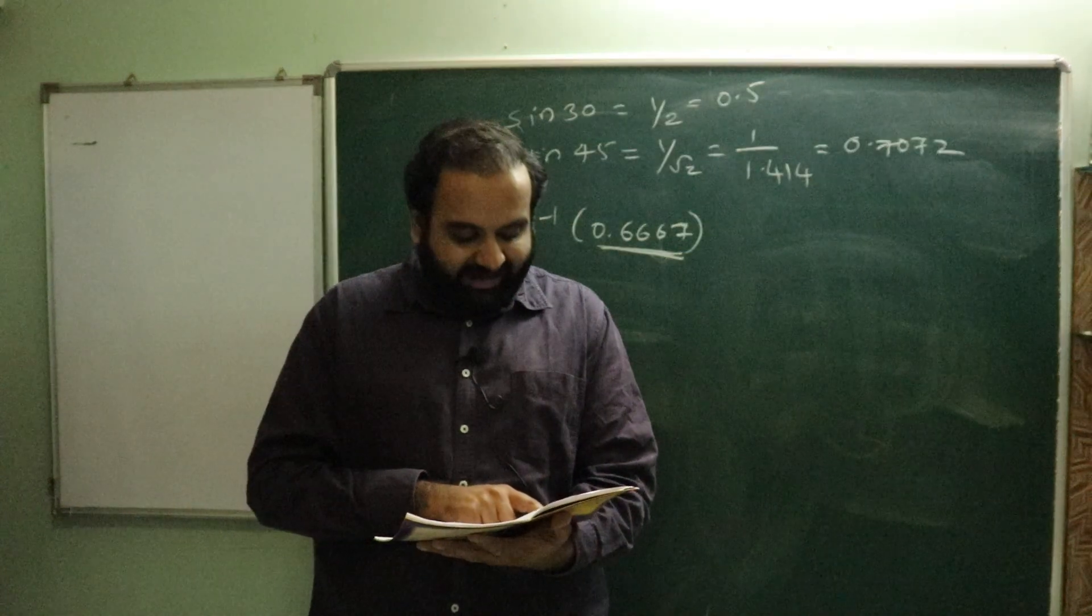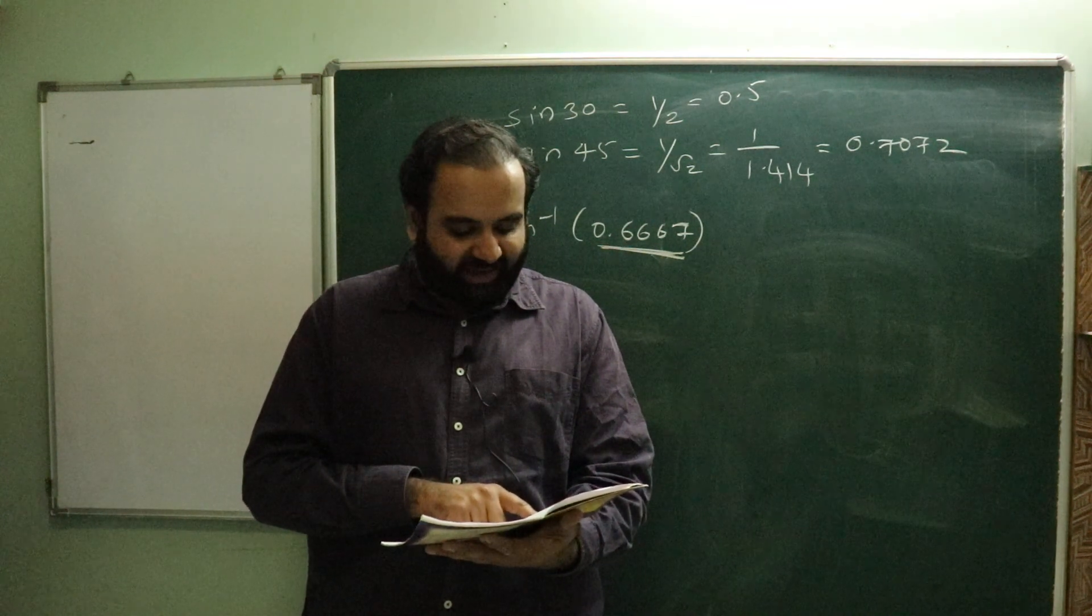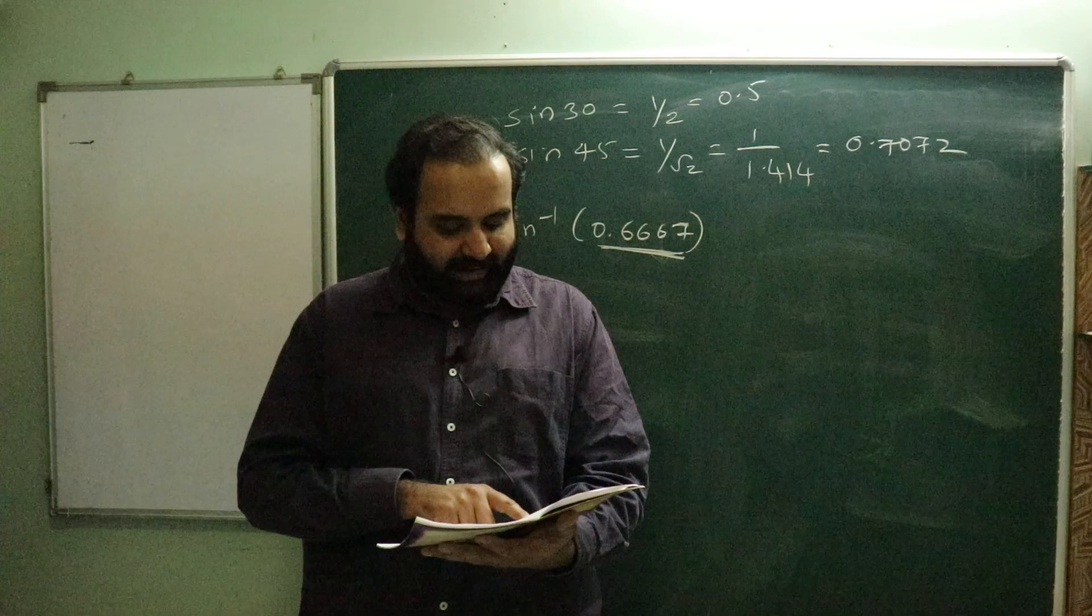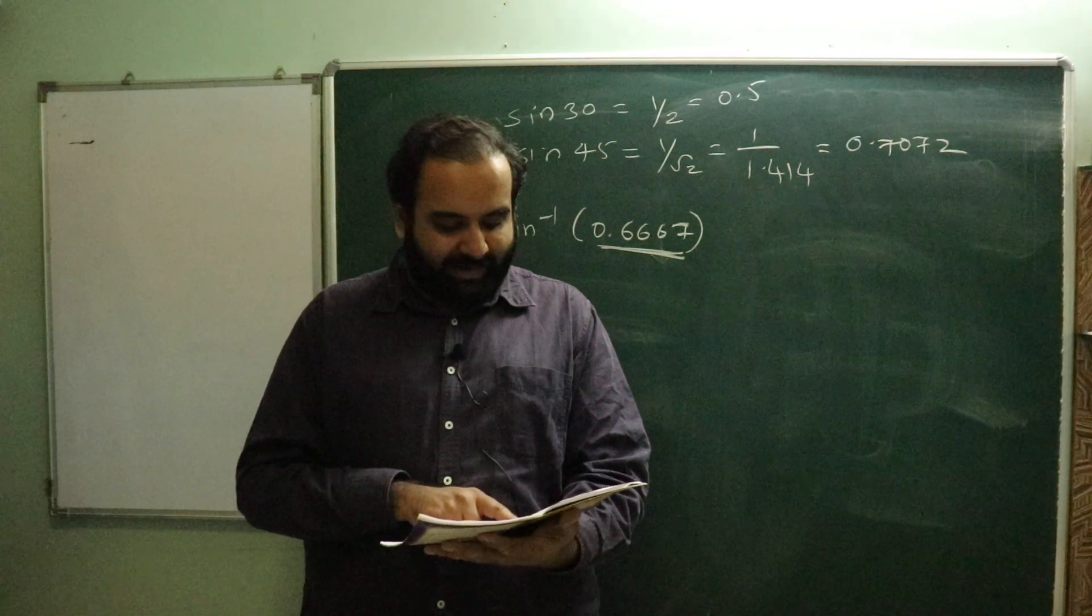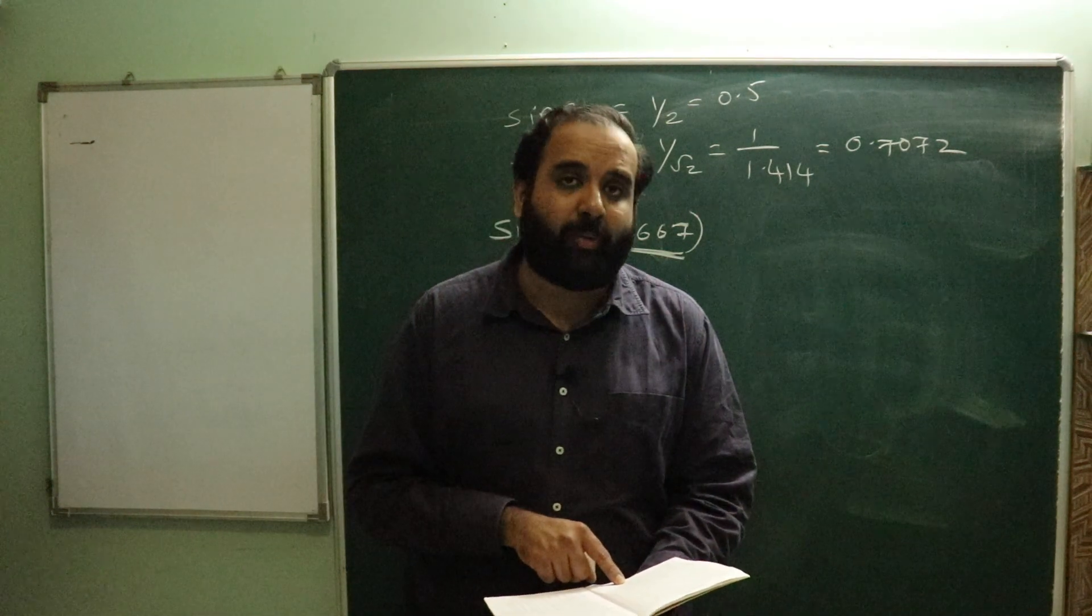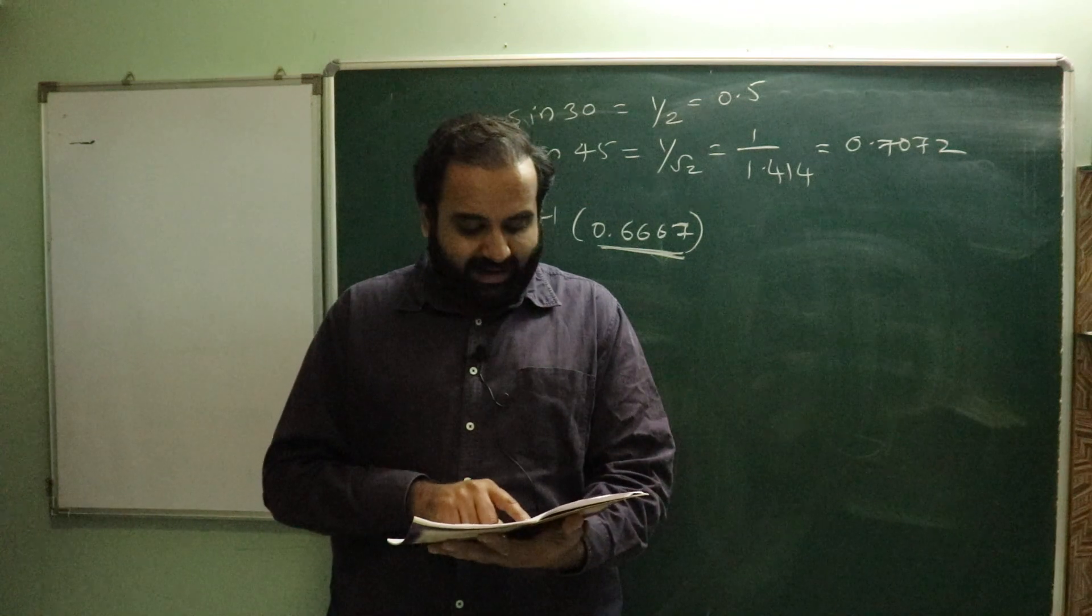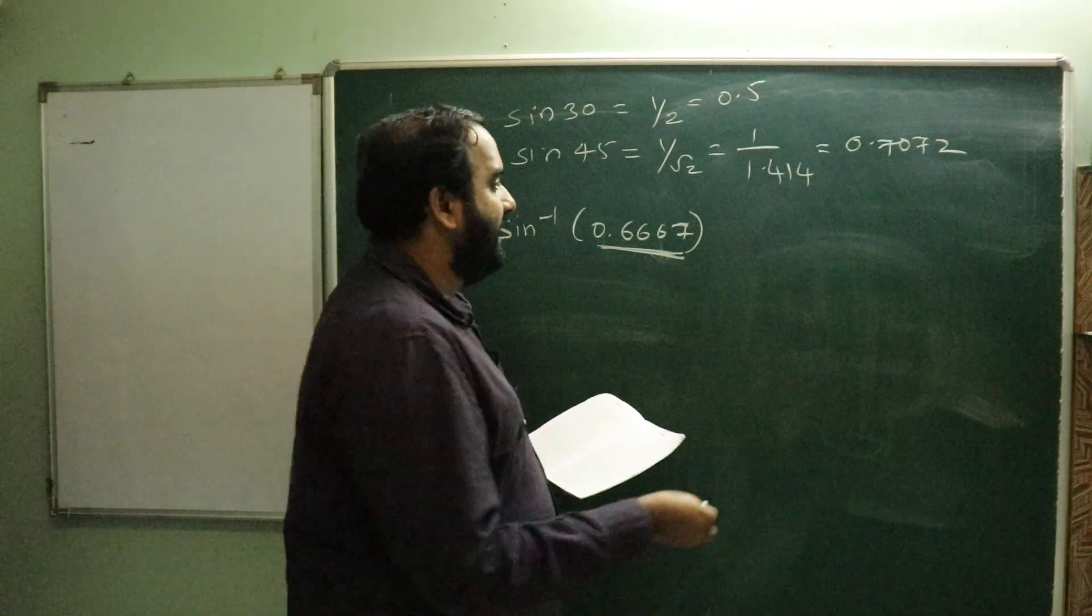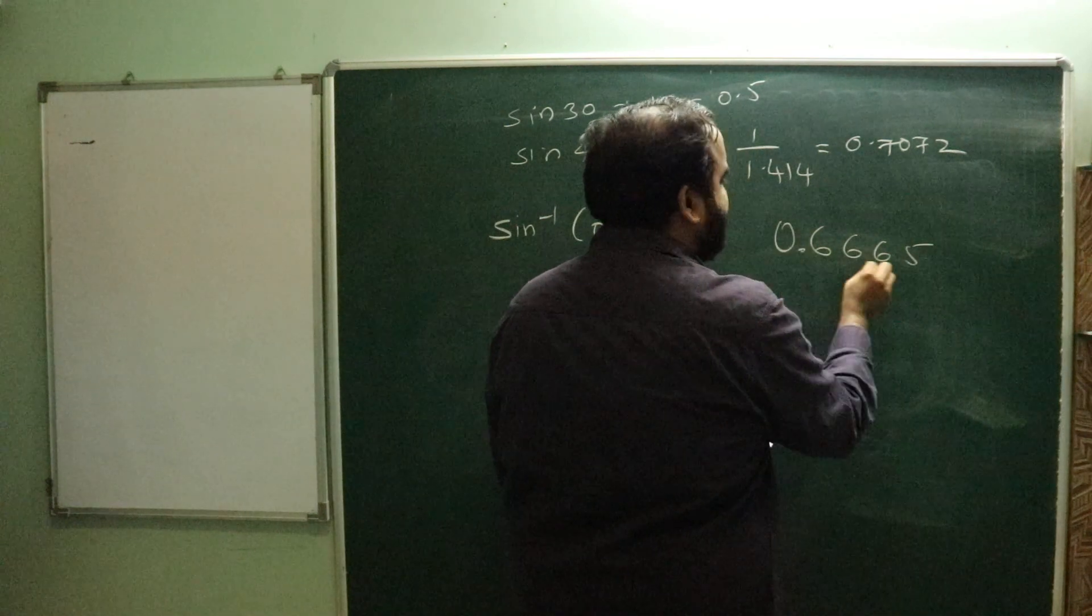Just check everyone. If you can see, we are somewhere close by to 40 degree. At 40 degree I have 0.6428. At 41 degree I have 0.6561. Look, I found at 41 in the 52 minute column, I have triple six. Can you all see 0.6665, but I need 0.6667.